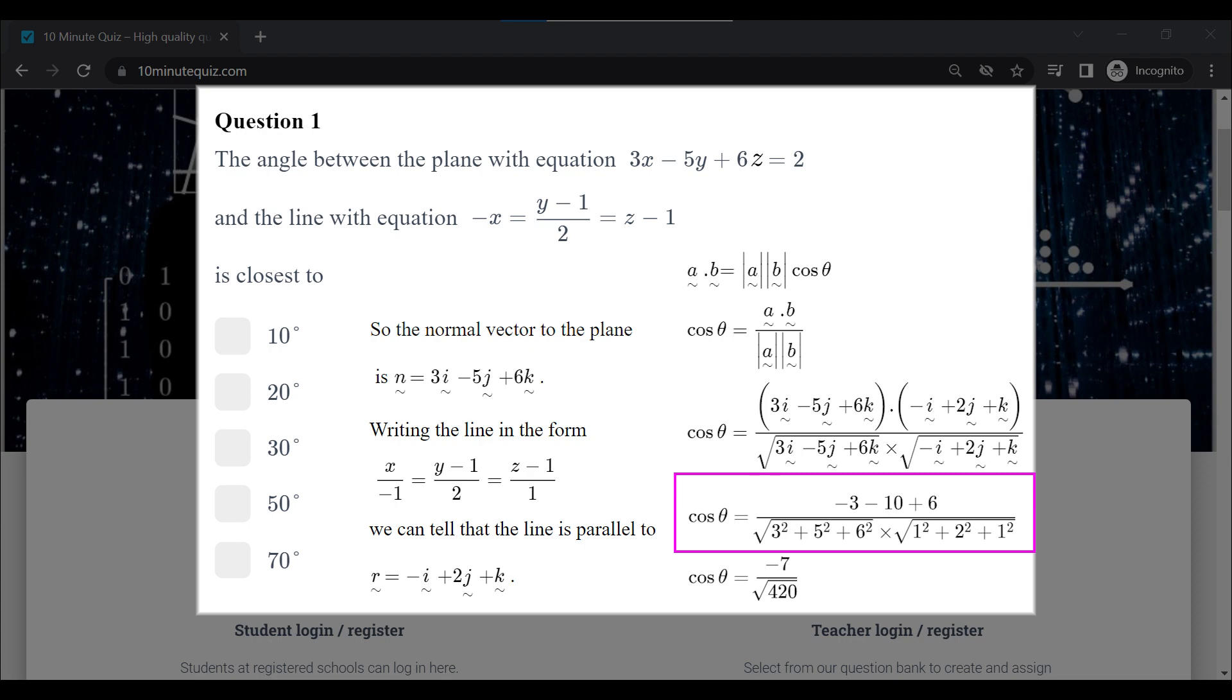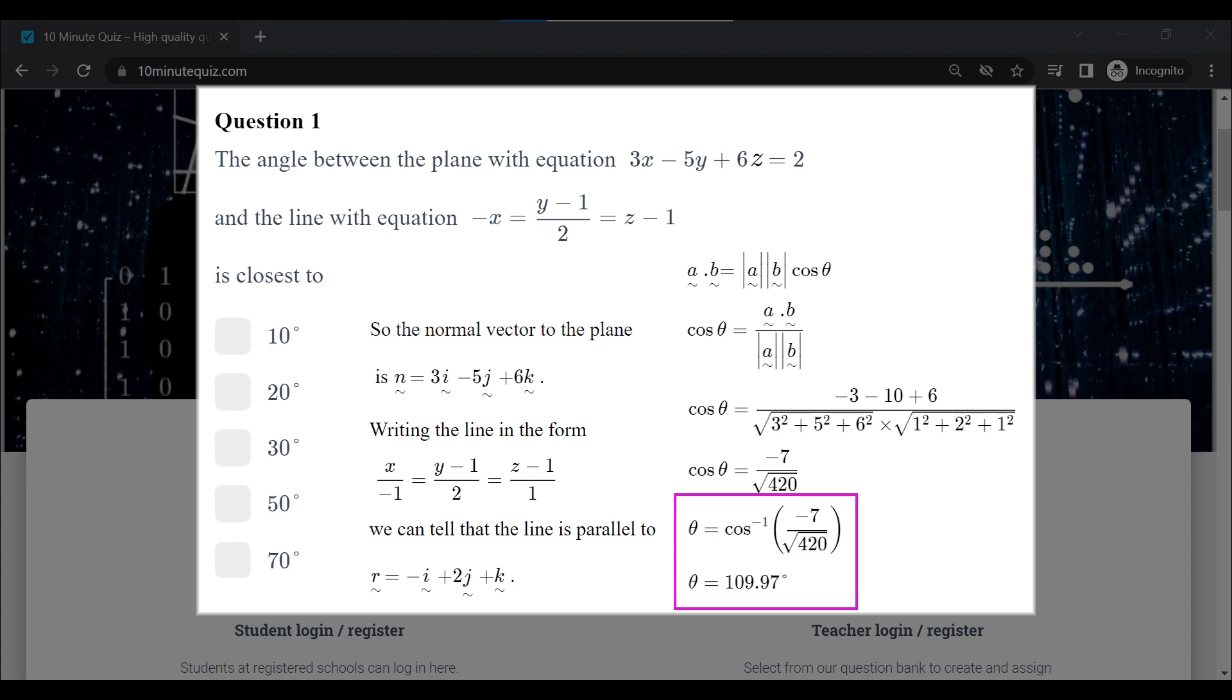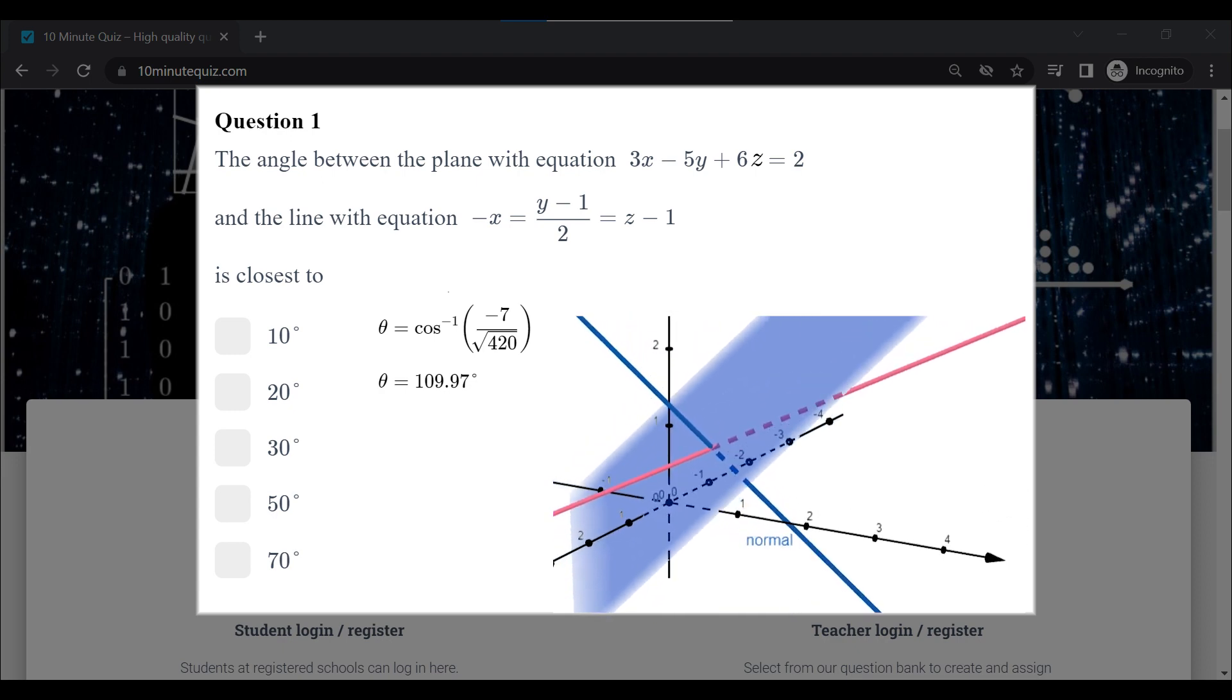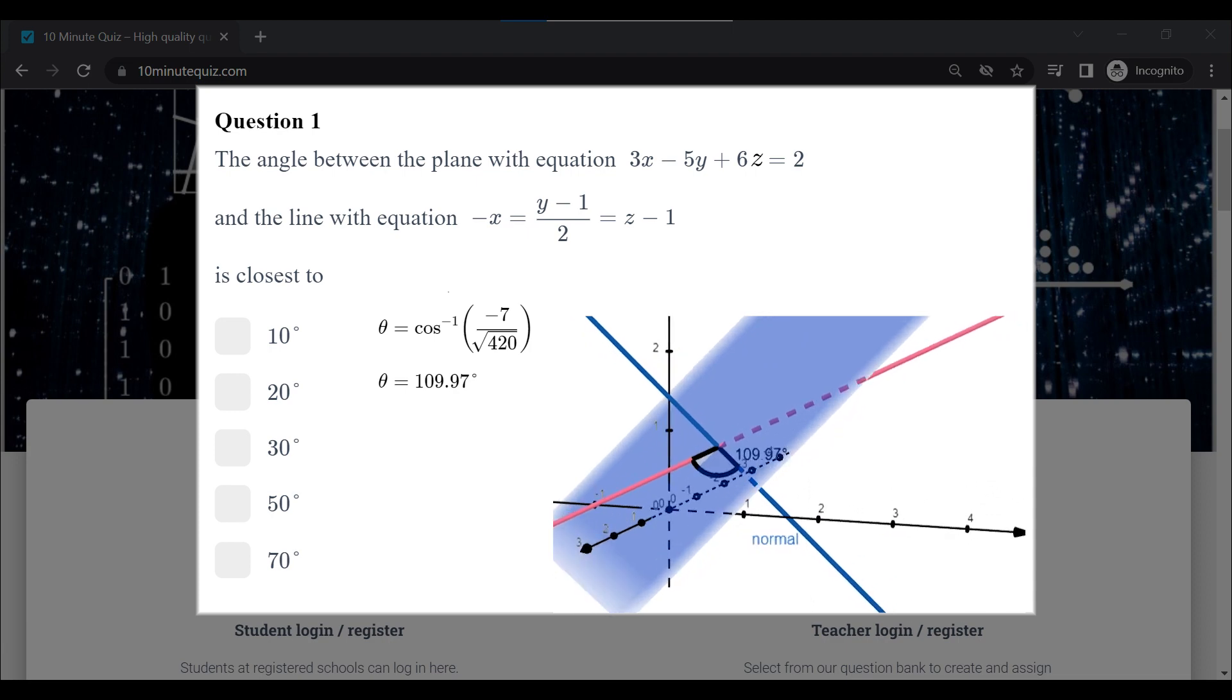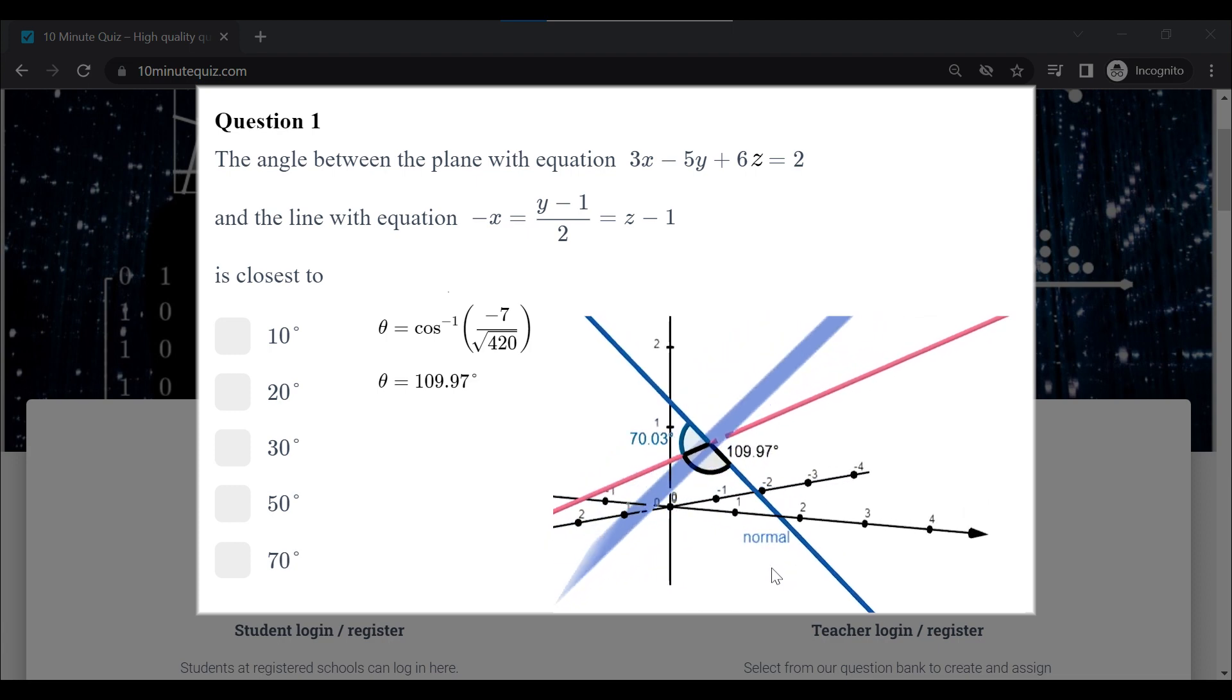We're going to need a calculator to help evaluate that, and then we take the inverse cosine. If we do inverse cosine, that's going to give us about 110 degrees. That is an obtuse angle, because what we've done is we've found the angle between two vectors. But if we consider the two lines, what we actually want is the acute angle here. So we just then subtract from 180, and that would give us 70 degrees.